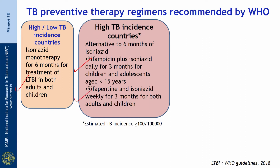Rifapentine and isoniazid once weekly for 3 months for both adults and children is the other recommended regimen. We must remember that India is one of the high TB incidence countries because the estimated TB incidence is more than 200 per lakh population.